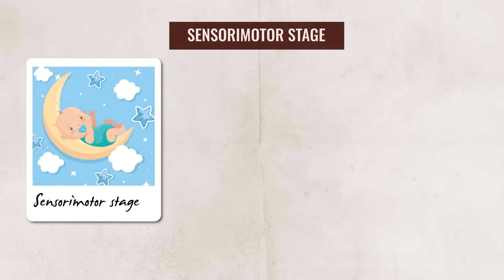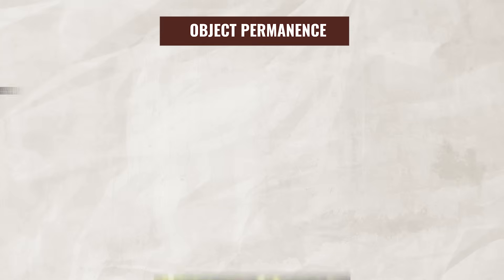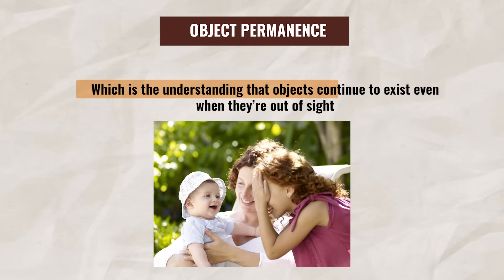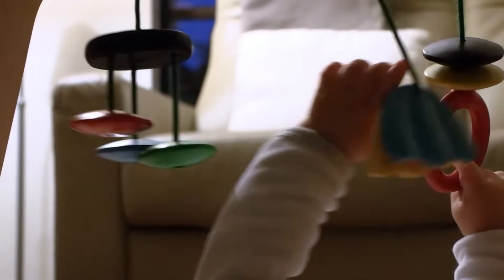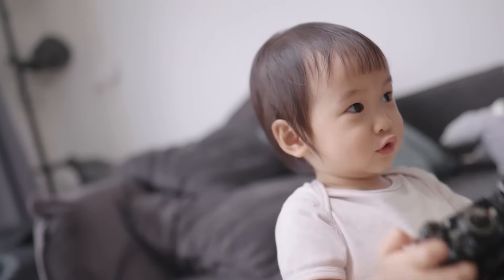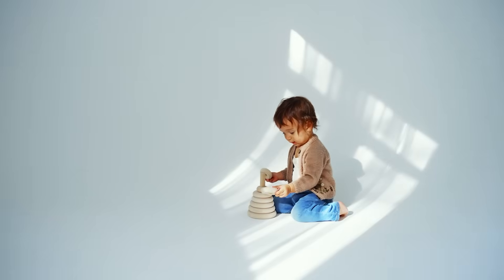The first stage is the sensorimotor stage, which generally starts at birth and goes until the child is around two years old. During this stage, children gain access to their hands and begin to move, with learning occurring through seeing, touching, hearing, and through their actions — such as grabbing, pushing, or throwing items. One major cognitive development during this stage is object permanence: the understanding that objects continue to exist even when they're out of sight. Children are constantly exploring their environment through physical interactions and sensory experiences, and the ability to manipulate objects is key to their understanding of the world.